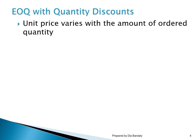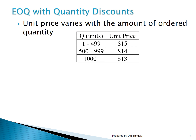Now we are relaxing the assumption that says no matter how much you order, the unit price would be the same, because we agreed this is not very realistic. So what happens when we have different prices? For example, if the supplier offered us the following price structure: if we buy anything below 500 units, we pay $15 per unit; it will be $14 if the quantity is in the range between 500 and 999; and any quantity beyond 1000, we pay the lowest price of $13. The EOQ model by itself is not going to consider these changes in unit prices, but what we want to do is add to our EOQ a component, and this component is the purchase cost.